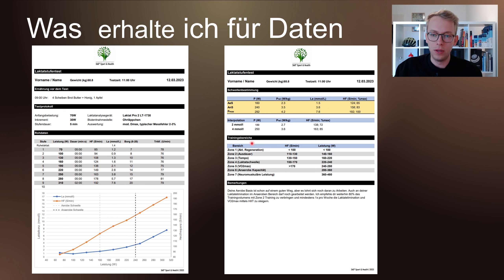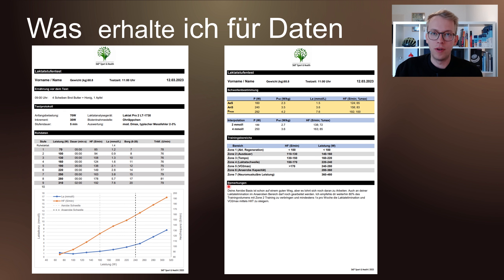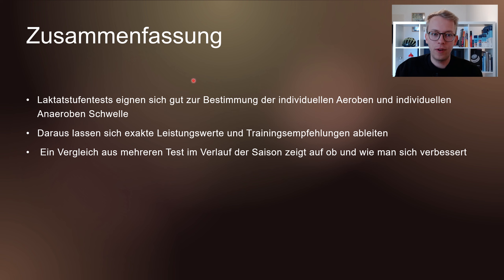Die ersten drei Stufen sind unter dem Ruhelaktatwert, also ist der Test optimal abgelaufen. Man bekommt auf der rechten Seite die AES und die ANS: die individuelle Aerobe Schwelle bei 160 Watt, bei 2,3 Watt pro Kilogramm oder bei einer Herzfrequenz von 124 Schlägen pro Minute, und die individuelle Anaerobe Schwelle bei 240 Watt, bei 3,5 Watt pro Kilo oder bei 3,6 Millimol Laktat bzw. 158 Schlägen pro Minute.